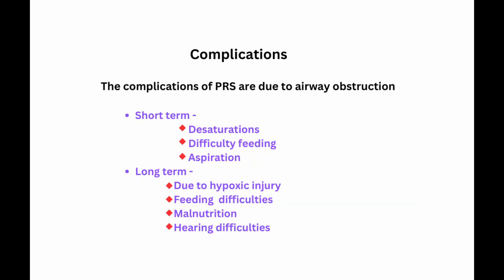Complications in PRS are mainly due to airway obstruction. Short-term complications include desaturation attacks, difficulty in feeding, and aspiration events. Long-term complications may include hypoxic injury, malnutrition due to inability to feed well, and hearing difficulty, as cleft palate can lead to middle ear effusion and hearing loss.